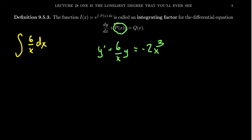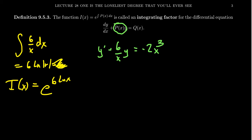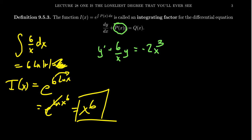An antiderivative of 6 over x is 6 times the natural log of x. In this situation, forgetting the constant doesn't matter. So the integrating factor i of x equals e to the 6 natural log of x. Bringing the 6 inside gives e to the natural log of x to the sixth, and e to the natural log cancel, leaving just x to the sixth. That's why we multiplied by x to the sixth. All one has to do is multiply both sides by this integrating factor and everything simplifies. In the next video I'll show more examples and the general process — stay tuned.